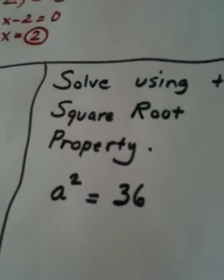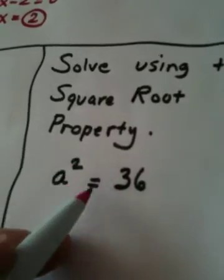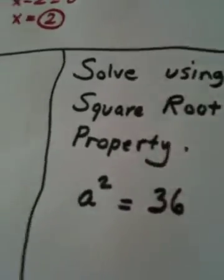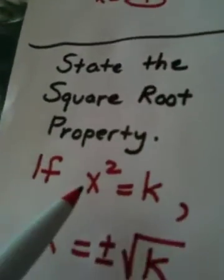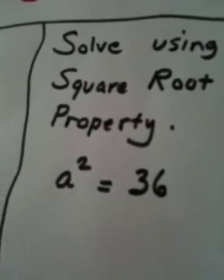So, if I'm asked to solve the next equation using the square root property, a squared equals 36. Notice it's already in the form we need. Something squared equals a constant.